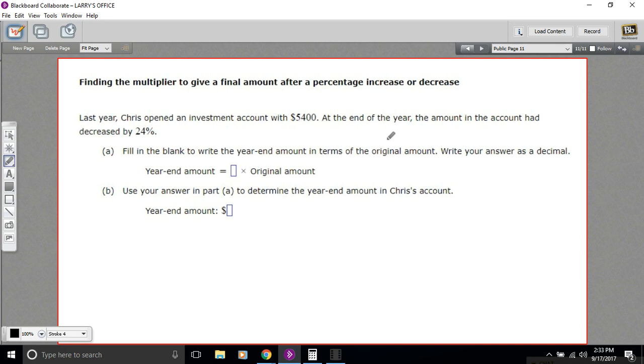At the end of the year, the amount had decreased by 24%, so Chris has got less money than when he started with—not a good year for investing. The first part of this question says fill in the blank to write the year-end amount in terms of the original amount. This, I think, is the trickier part.